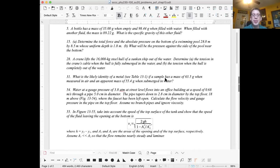That brings us to number 31. What is the likely identity of a metal? Look at the tables of densities. If a sample has a mass of 63.5 grams when measured in air, and an apparent mass of 55.4 grams when submerged in water, you can figure out the buoyant force from that. The buoyant force is equal to the density of the water times G times the volume of the metal.